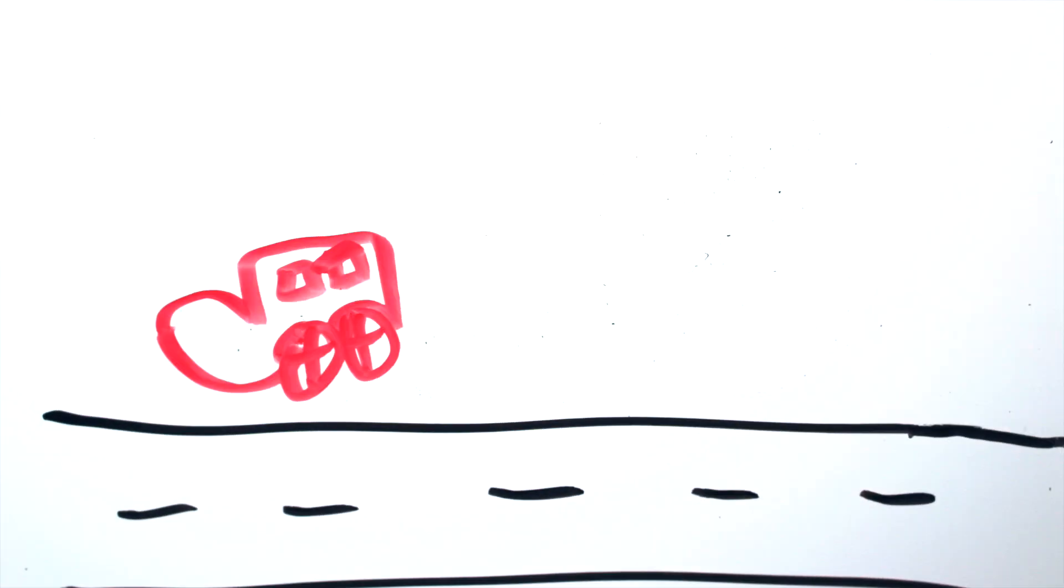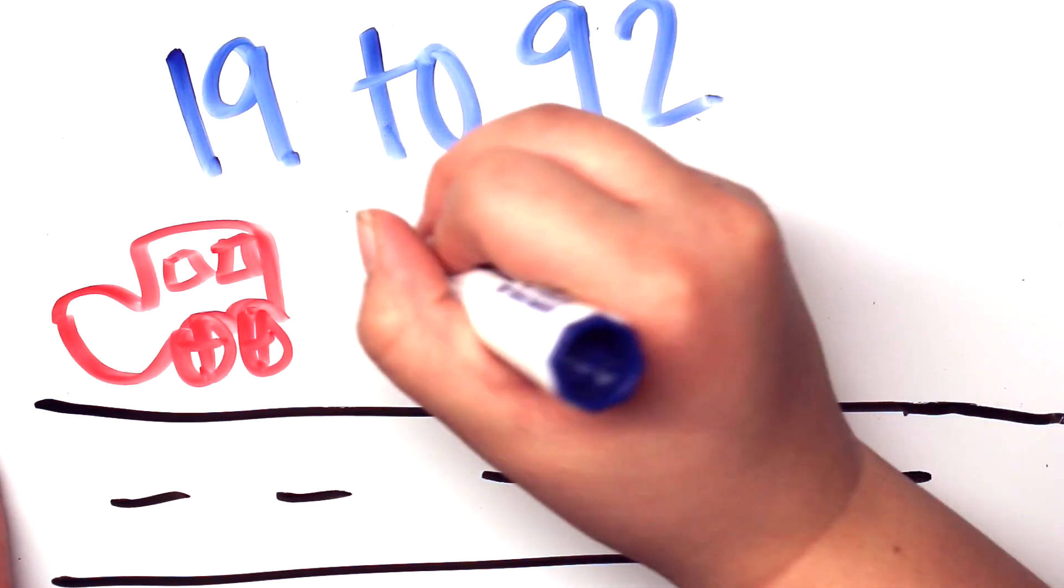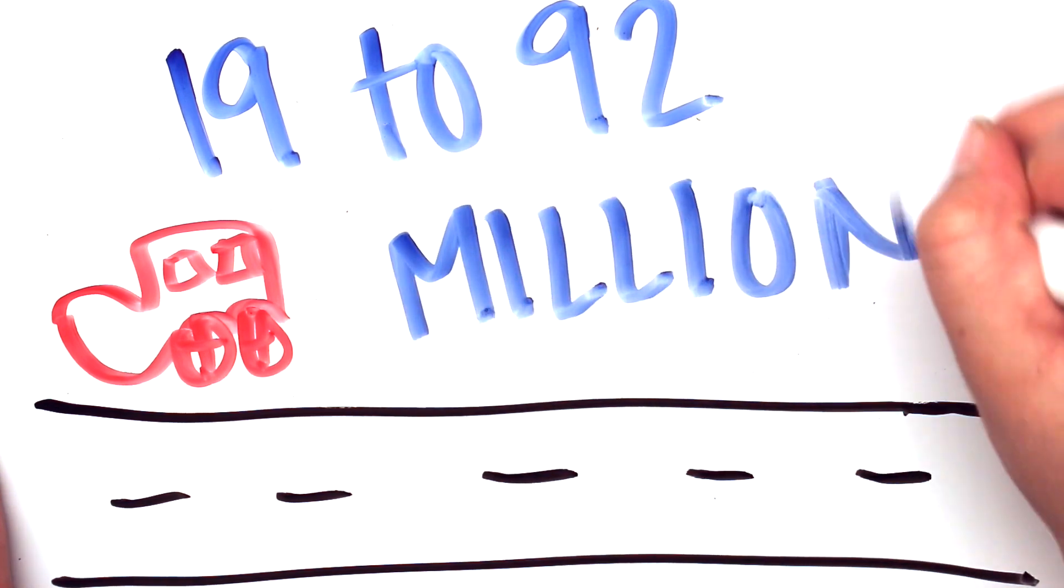Estimates for the amount of carbon released from plastic manufacturing is around 100 to 500 million tons per year. That is equivalent to emissions from between 19 to 92 million vehicles on the road.